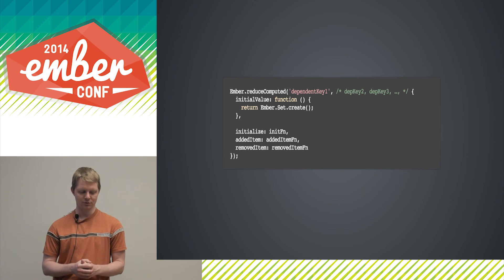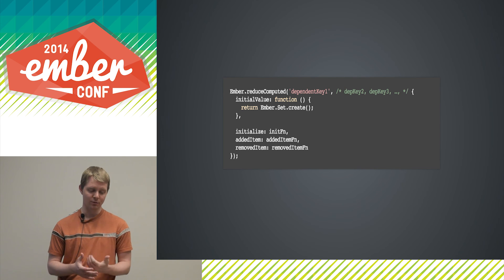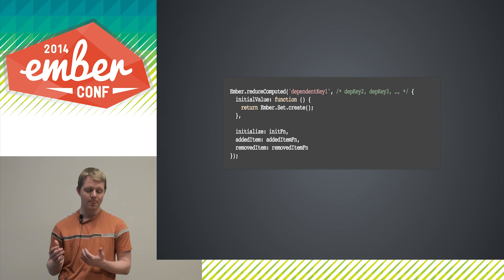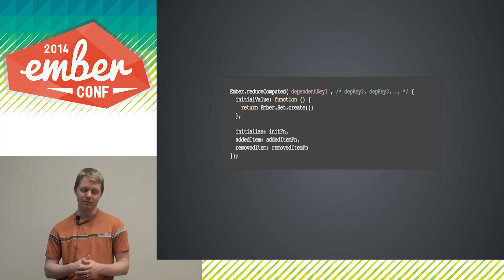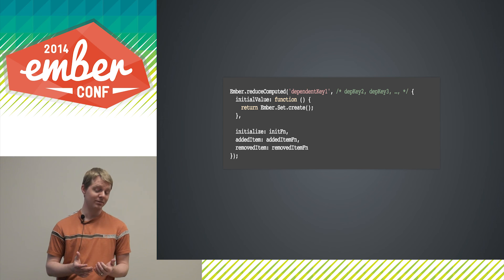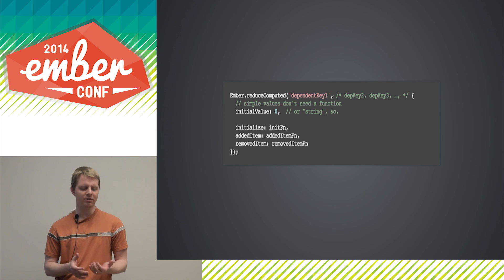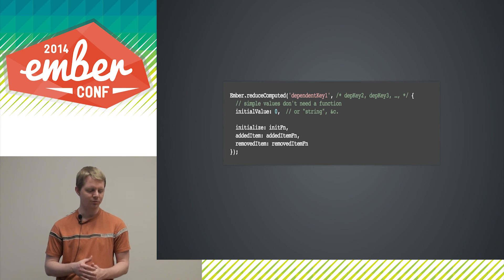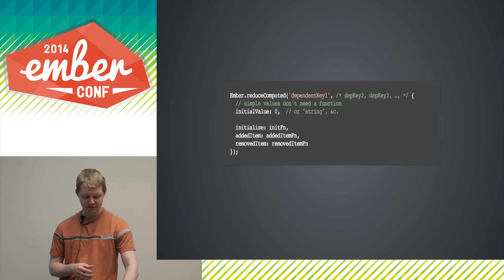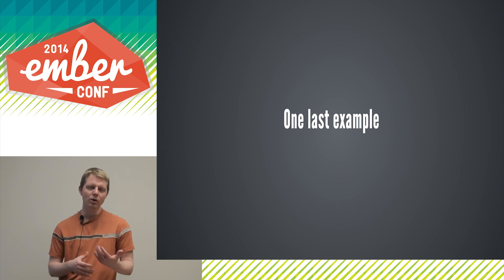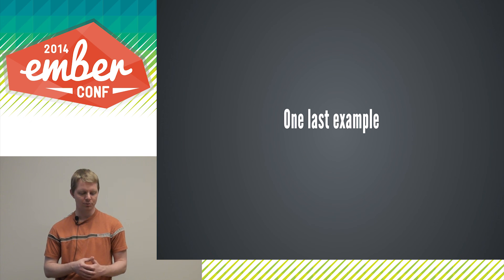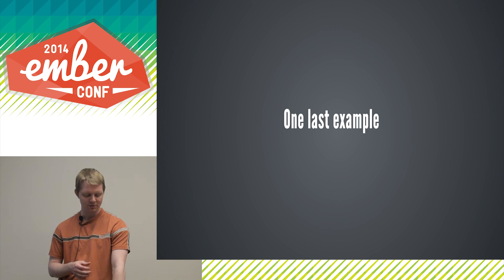Here is how you do a reduce computed. It looks almost exactly like an array computed. The chief difference is that the object you pass at the end also includes an initialValue, which is a function that returns the initial value. For simple values like numbers and strings, it's fine to just have the value itself — the function form is just a shorthand.